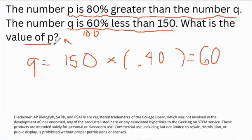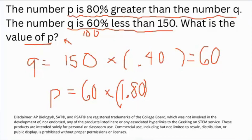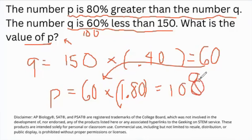We're looking for the value of P, and we only have the value of Q. So we have to think — P is 80% greater, so it's 100% plus 80%, or 1.80. We get 1.80 by taking the 100% into the 80 and moving it two decimal places to the left. We multiply 1.80 times our value of Q, which is 60. Calculating this, we get 108 — so our final answer is 108.